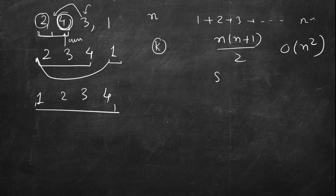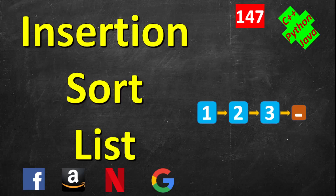Space is O(1). We will just keep track of a few node pointers: the current node, the previous node, and also the beginning of the list.